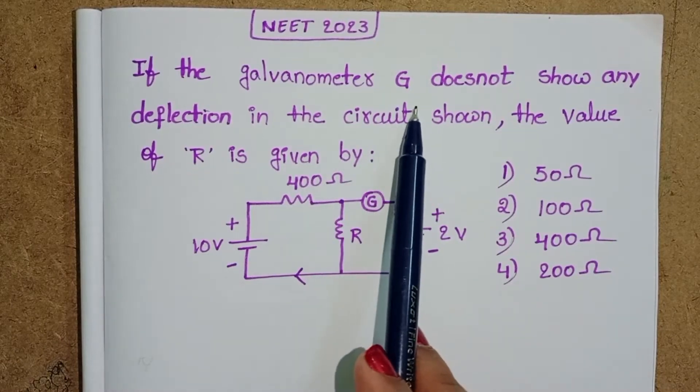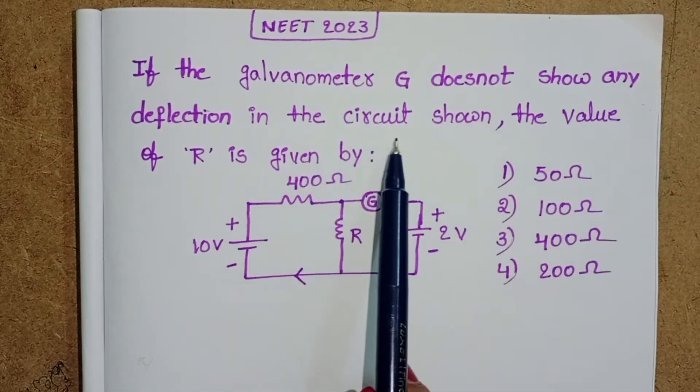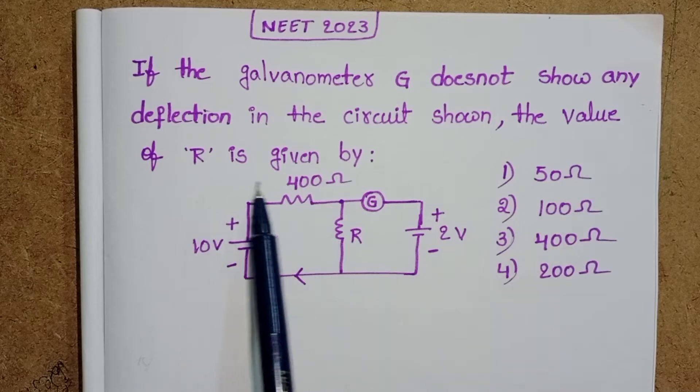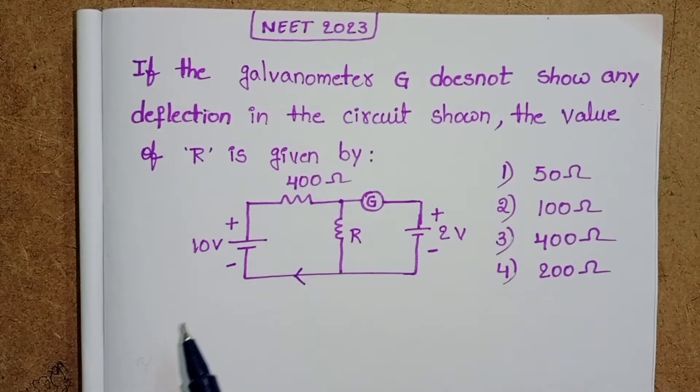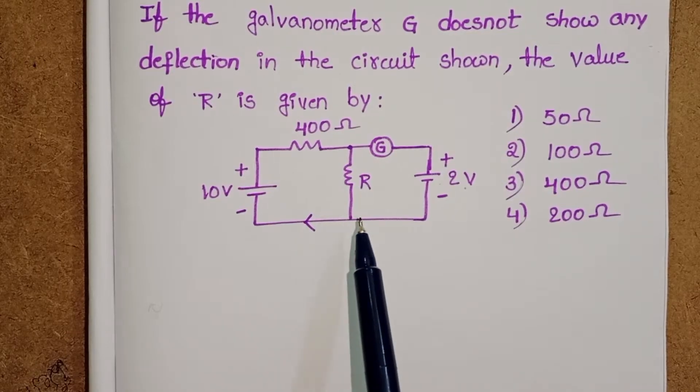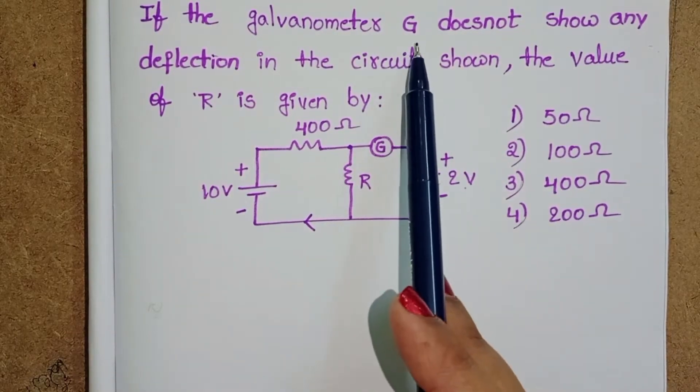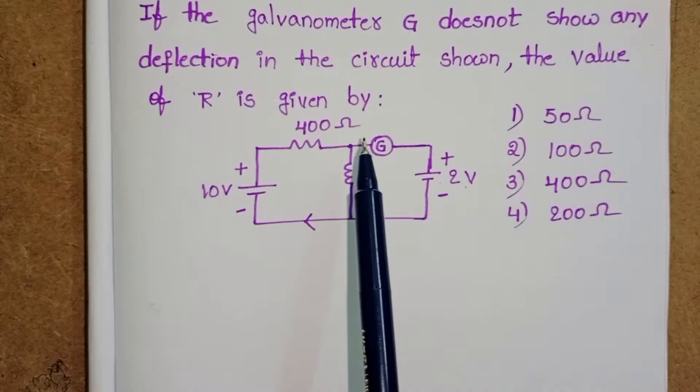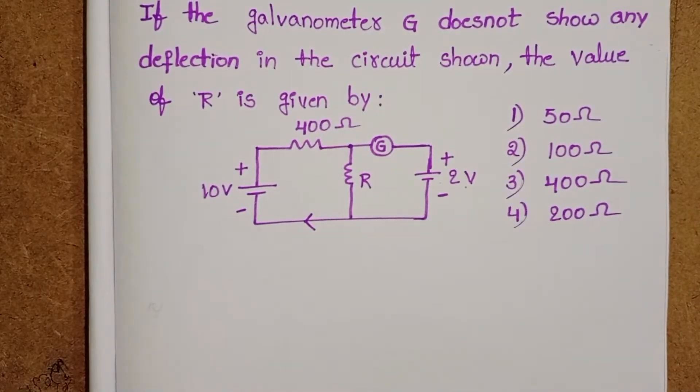If the galvanometer G does not show any deflection in the circuit shown, the value of R is given by. This is the given circuit diagram and the given condition is galvanometer G does not show any deflection in the given circuit.